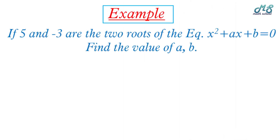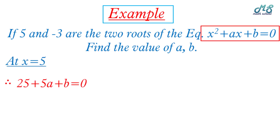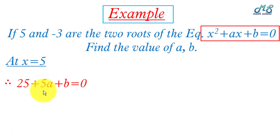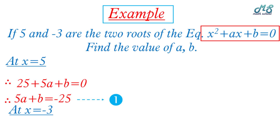Example: if 5 and negative 3 are the two roots of x squared plus ax plus b equals zero, find a and b. Since x equals 5 satisfies the equation: 5 squared plus 5a plus b equals zero, giving 25 plus 5a plus b equals zero, so 5a plus b equals negative 25 — this is equation one. Since x equals negative 3 satisfies the equation: negative 3 squared plus a times negative 3 plus b equals zero, giving 9 minus 3a plus b equals zero.